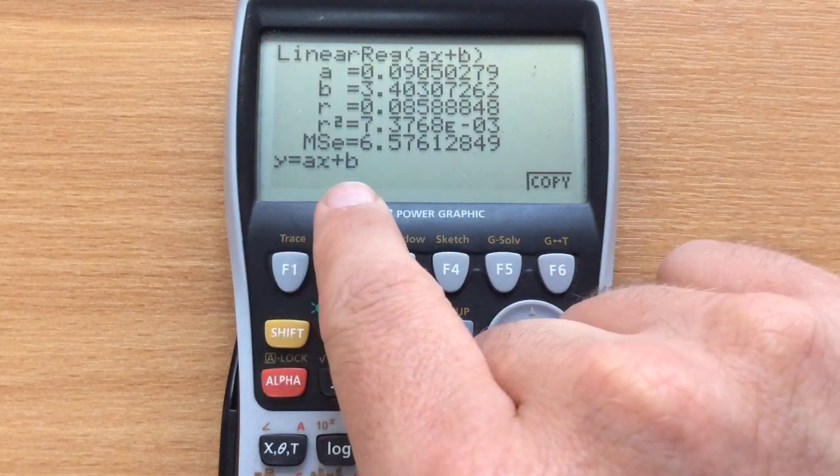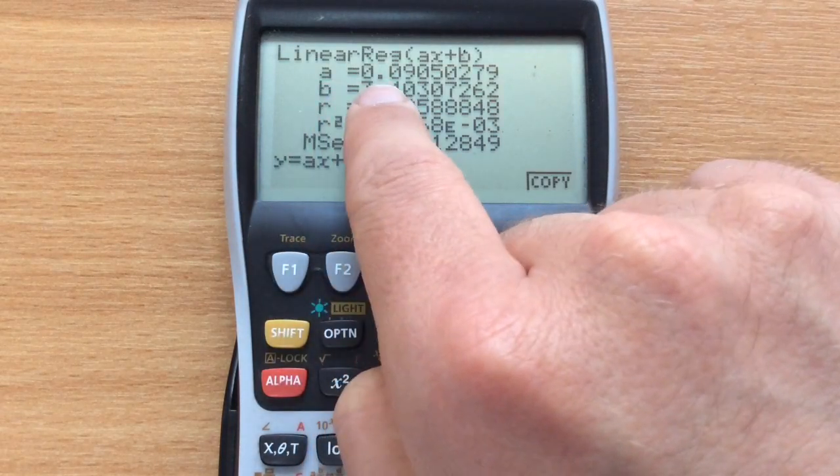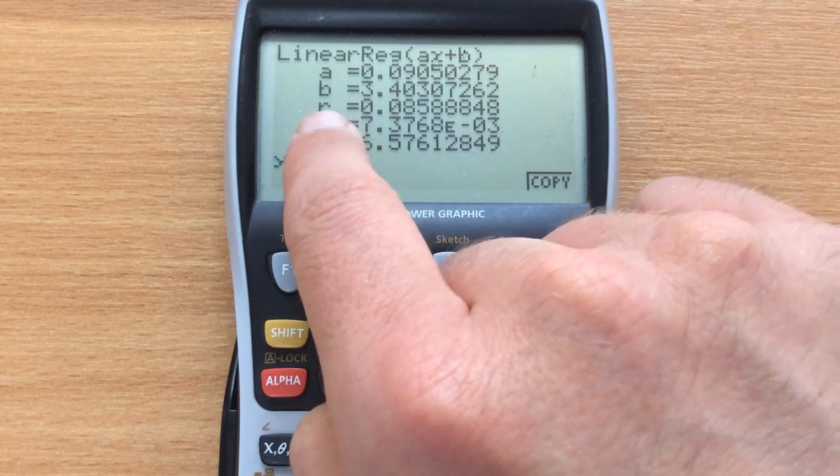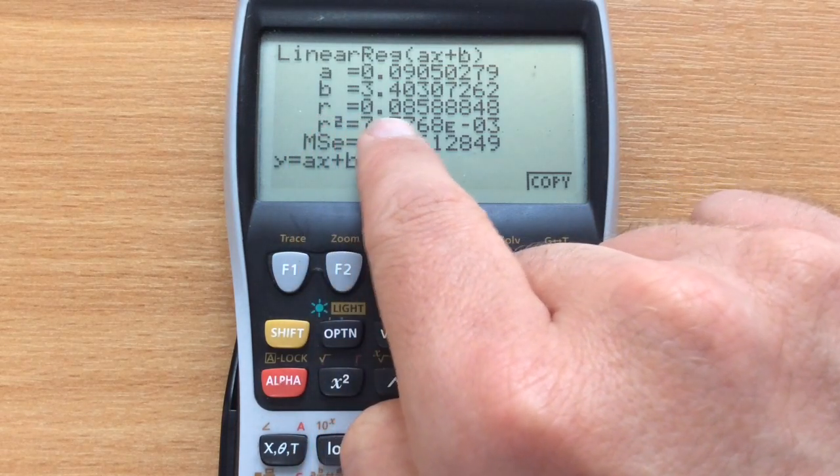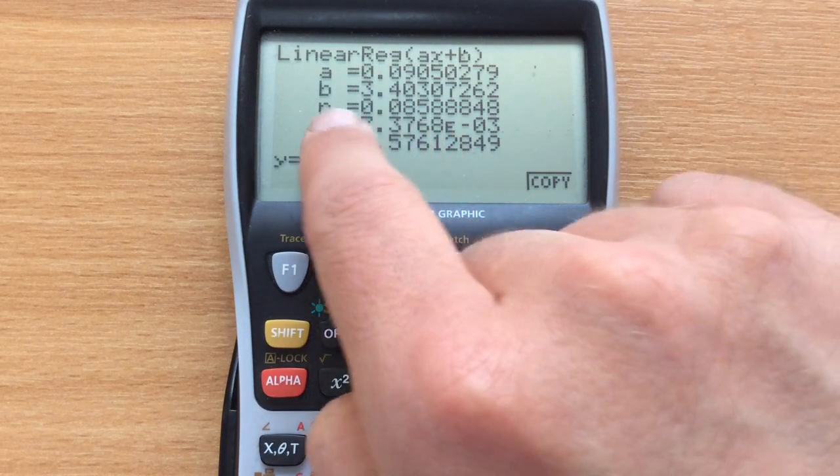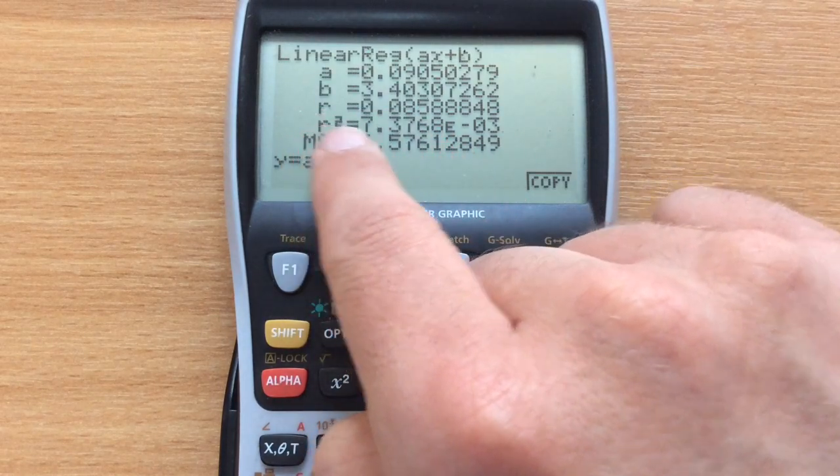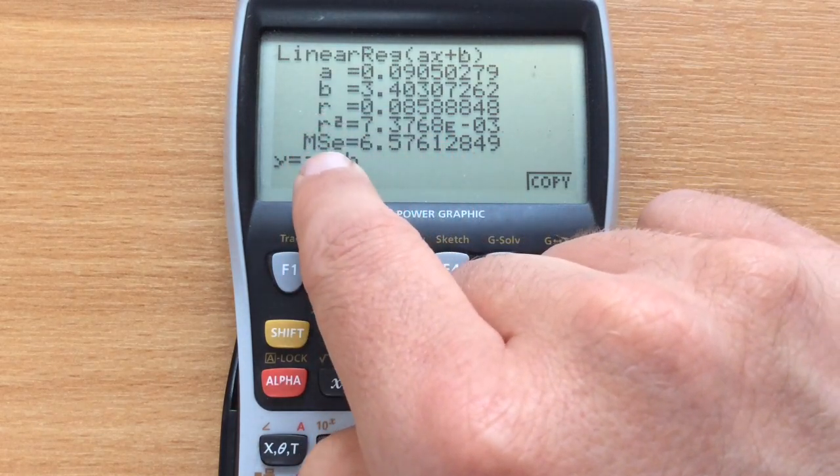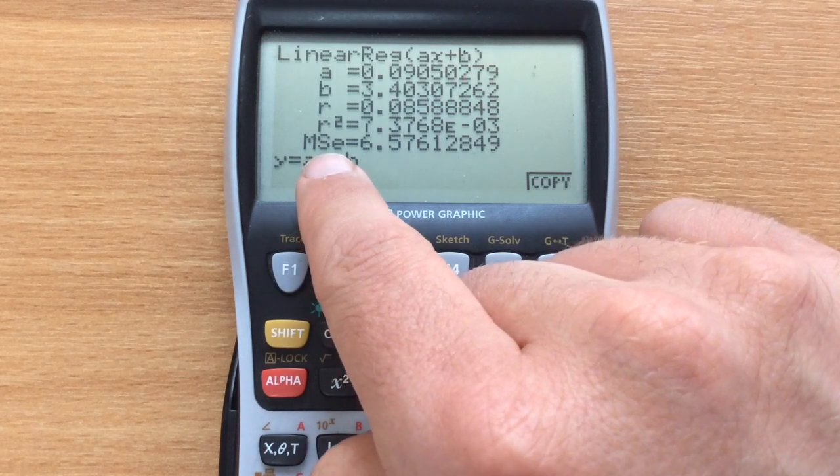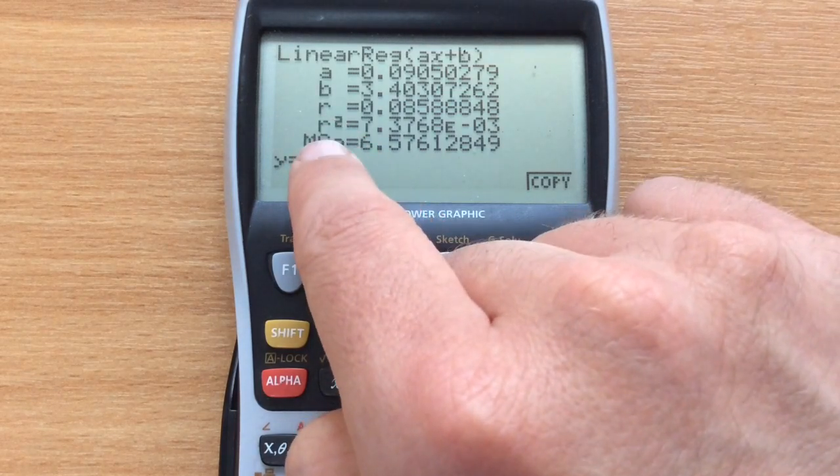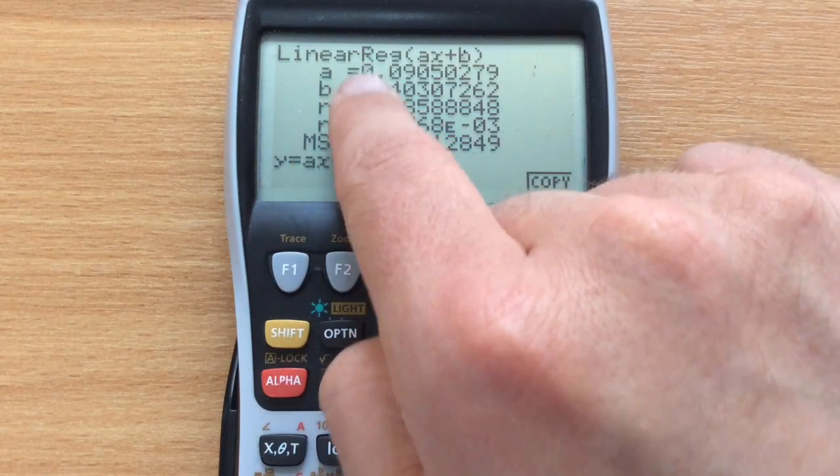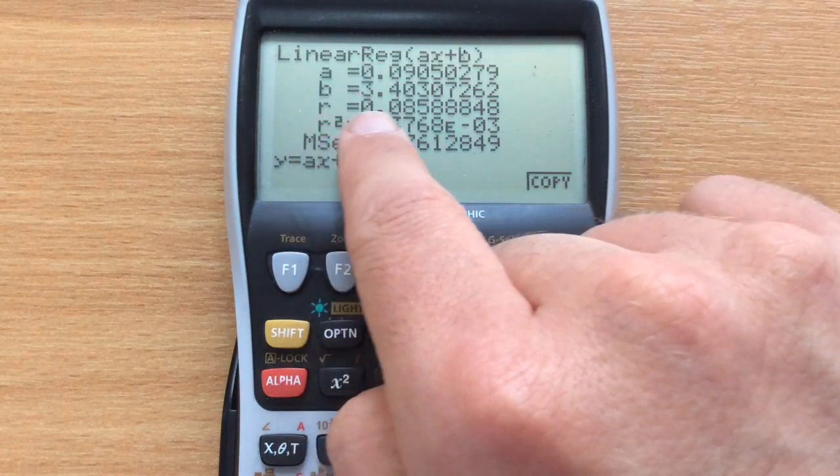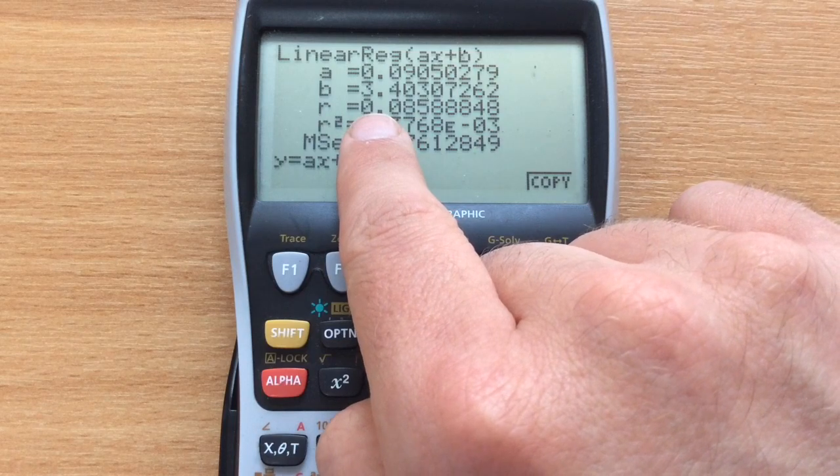It's done Y equals AX plus B and it's given me the value of A and the value of B. It's also done the product moment correlation coefficient, 0.085 and so on. It's worked out R squared and MSE. If you're an A-level student, you're not going to be using these, so we won't worry too much about those. But you've got the equation of your line of regression and your product moment correlation coefficient.